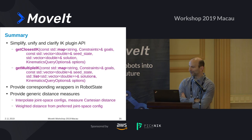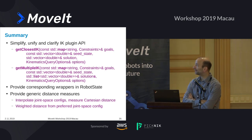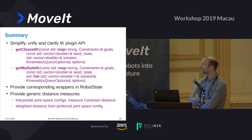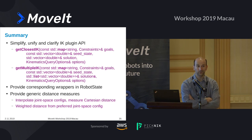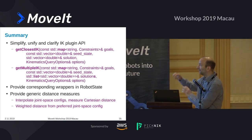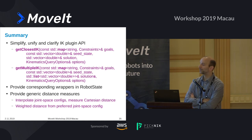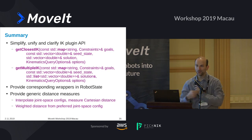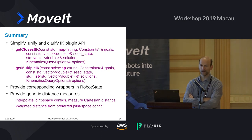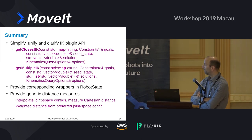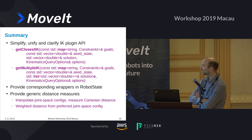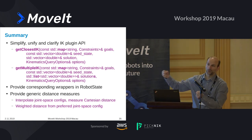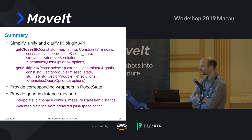In summary, I'm proposing to simplify the API, keeping essentially two functions: `getClosestIK` and `getMultipleIK`. This reduces the current set of up to ten different functions that need to be implemented down to only the most general versions, with all other variants handled by corresponding wrappers in robot state. I also suggest having a generic distance measure that computes the closeness of two IK solutions using interpolation in joint space.